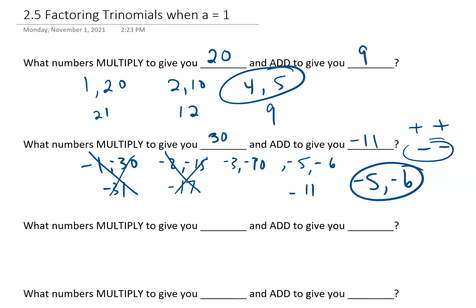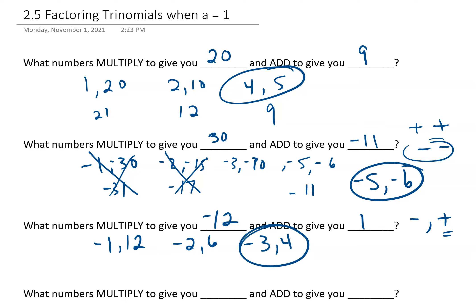What numbers multiply to give you negative 12 and add to give you 1? If two numbers multiply to give us a negative, we know one of them is negative and one of them is positive. And they're adding to give us a positive 1, so we must have more positives than negatives. So it could be negative 1 and positive 12, or negative 2 and positive 6, or negative 3 and positive 4 — that's our pair. That one adds to give you positive 1.